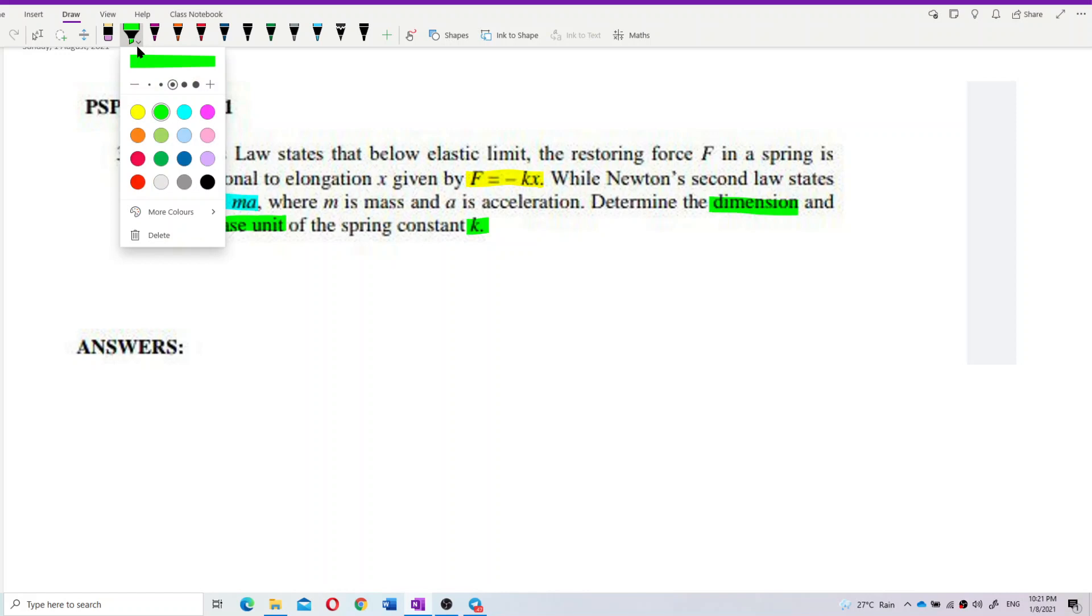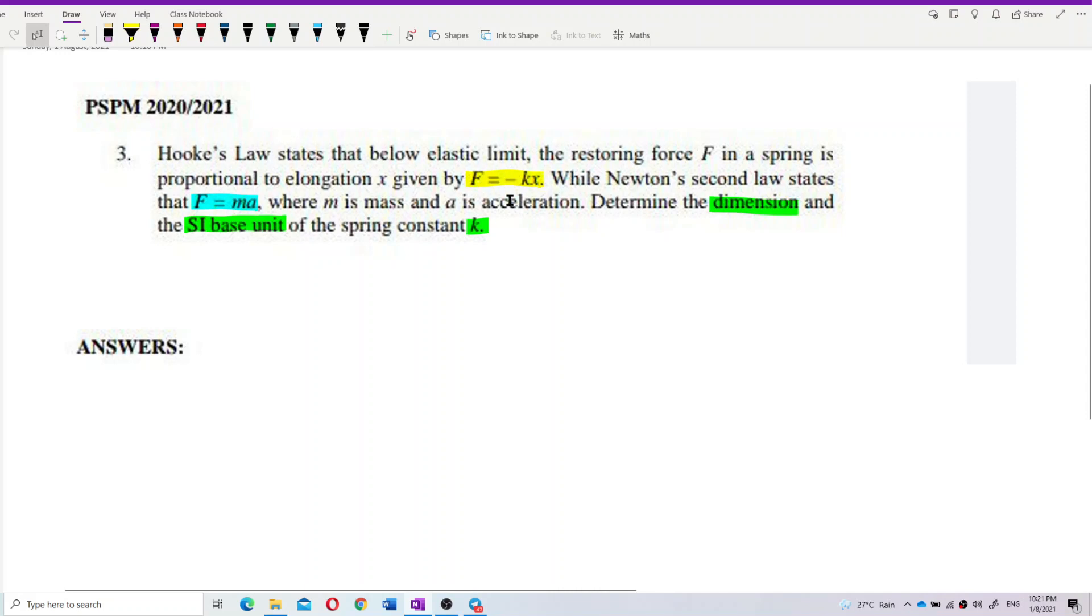This is Hooke's law, F equal to negative kx. Another formula is F equal to ma. And the question asks us to find the dimension and SI base unit of the spring constant k. We also need to know this: x is elongation, something like a length in meter. F is a force, m is a mass, a is acceleration.